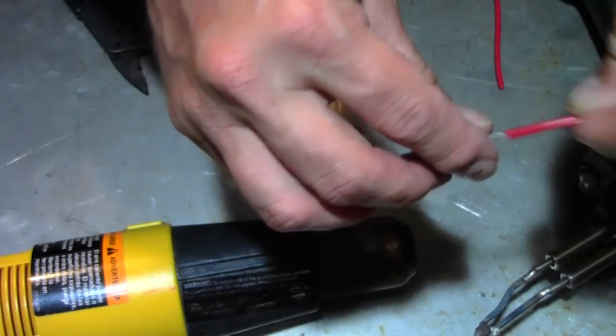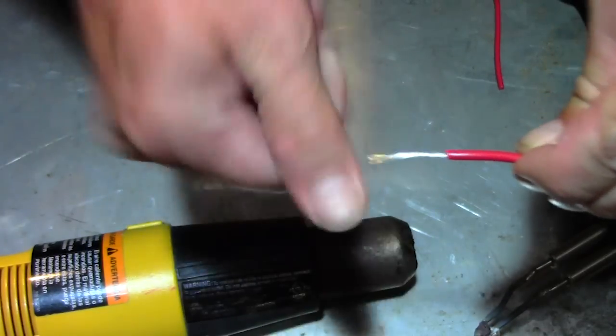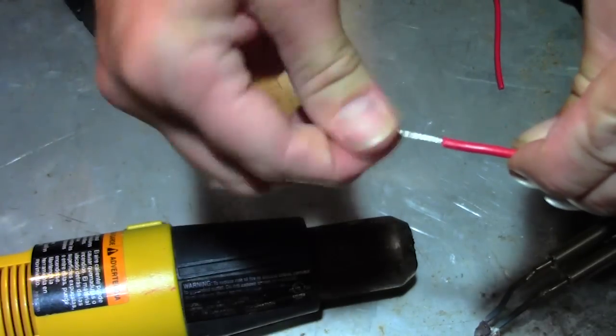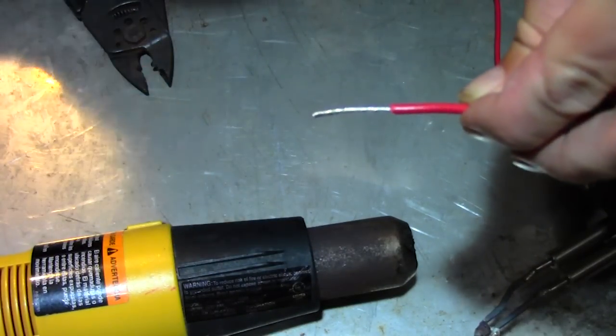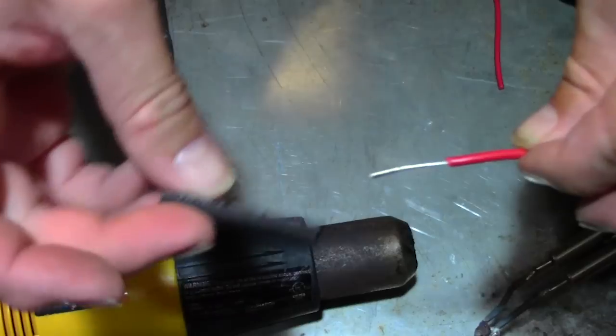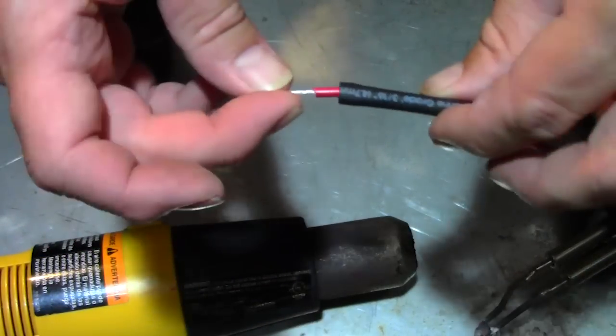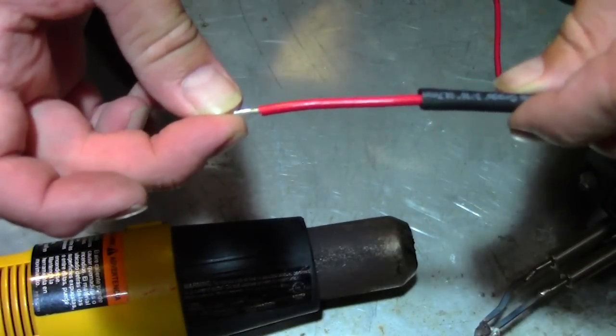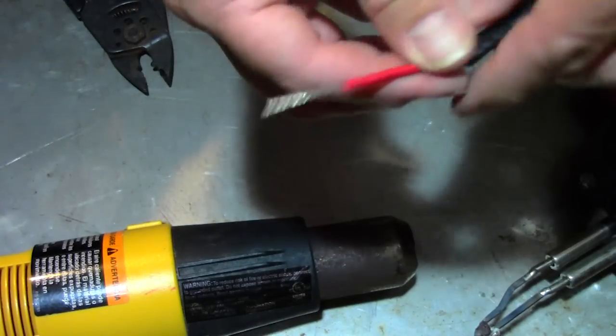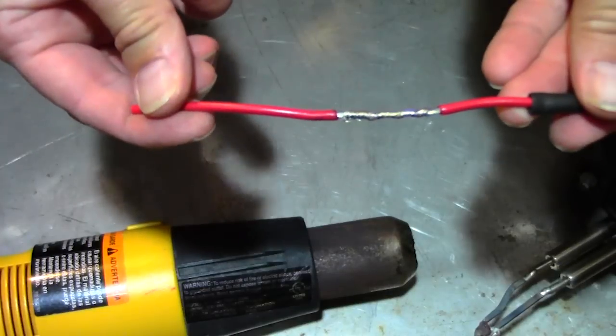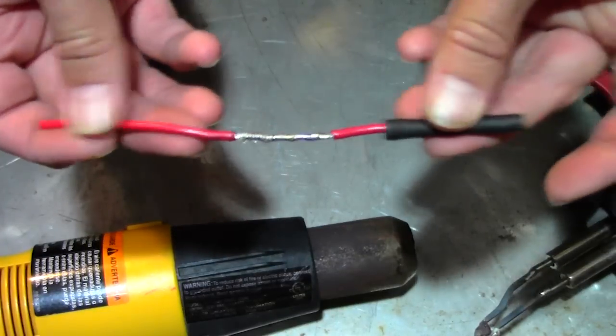To use heat shrink, put it on first after you've stripped and twisted your wire. Slide the heat shrink right over it. If you're using the soldering gun, slide it as far down the wire as possible so it doesn't heat up while you're melting the solder.